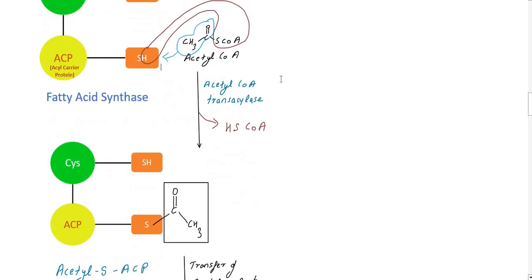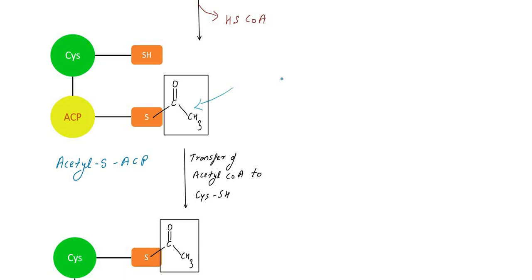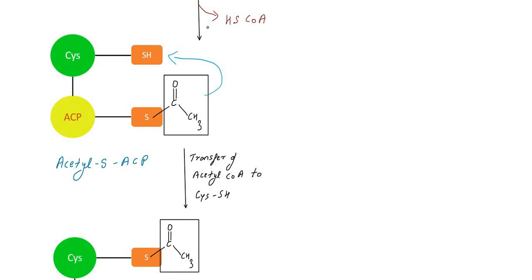In the presence of acetyl-CoA transacylase, the acetyl group is transferred from acetyl-CoA onto the SH group of the cysteine residue of the fatty acid synthase complex. This loading step places the acetyl group onto the cysteine SH, forming acetyl-S-enzyme.